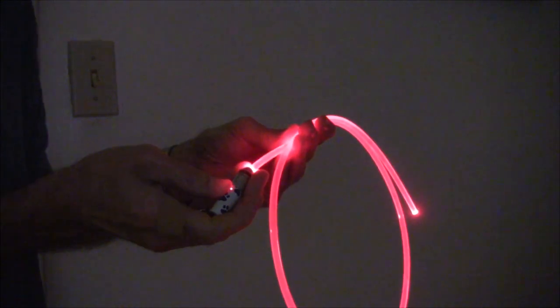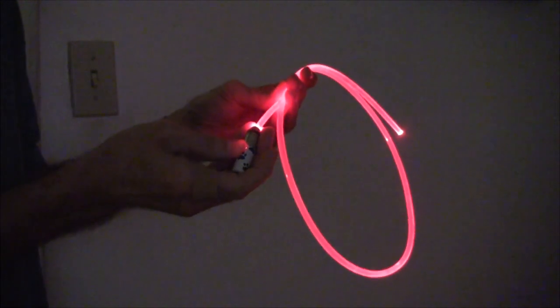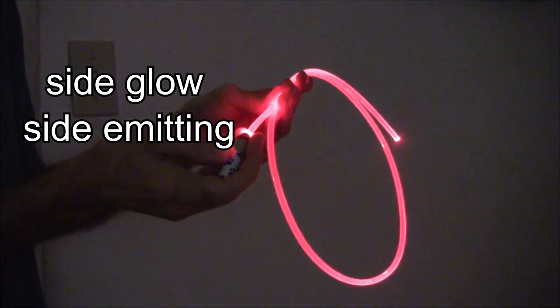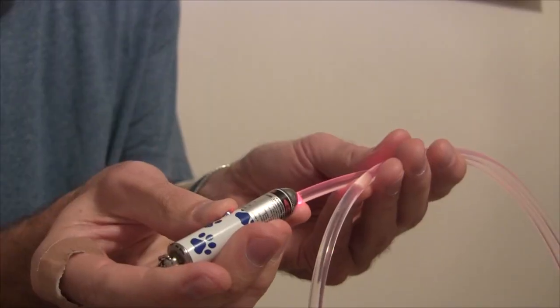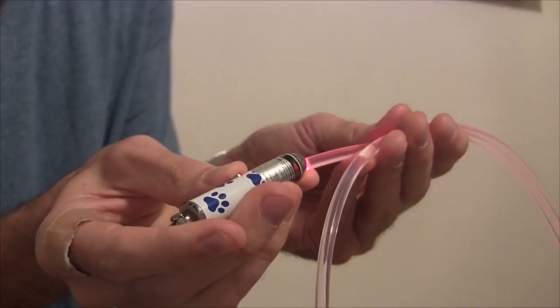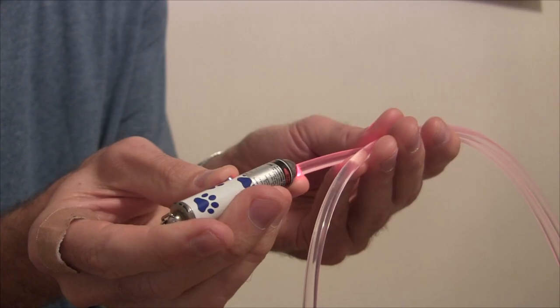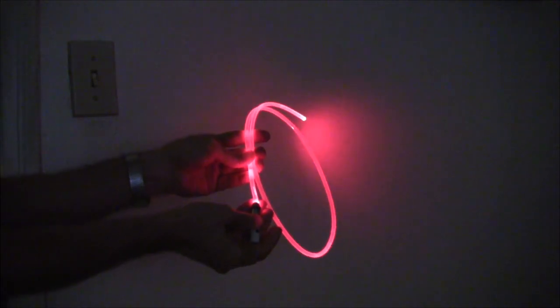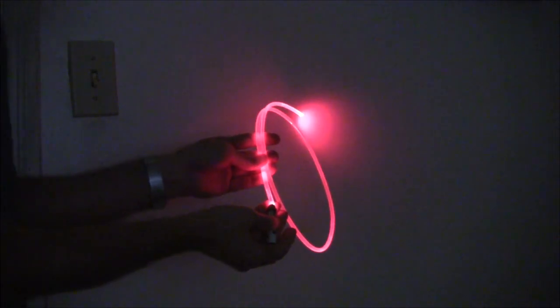That means it not only transmits light from one end to the other, but also emits light along its length. Other names it goes by are side glow and side emitting fiber optic cable. You can use an LED as a light source, but here I'm using a pet toy laser from a dollar store. For my purposes, it still transmits light to the other end quite well too.